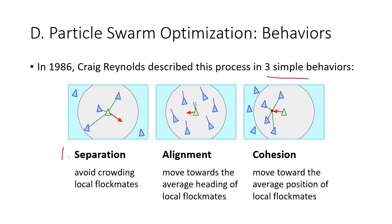The second behavior is called alignment. In alignment, birds align themselves towards the average heading of other birds in the flock. For example, if a particular bird is facing forward while the rest of the flock is facing to the left, that bird will move its head to the left so that it is moving towards the average heading of its local flock mates.